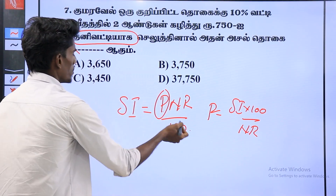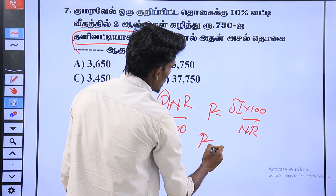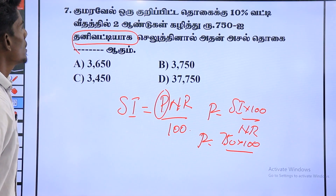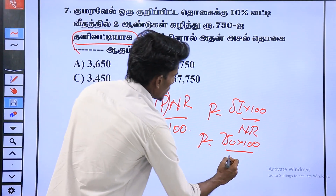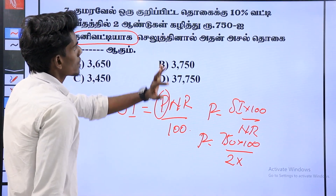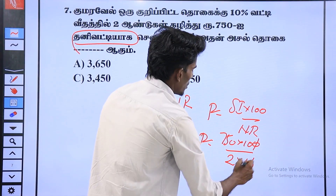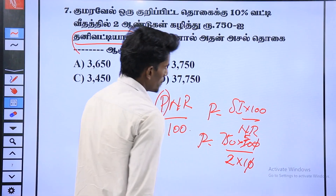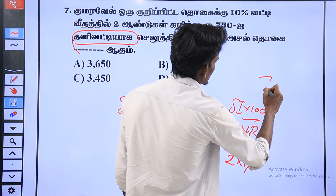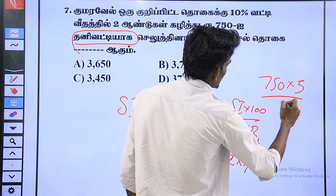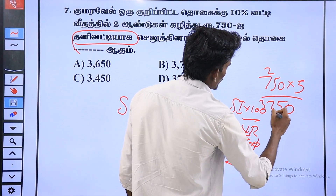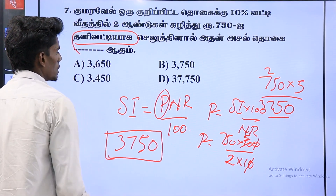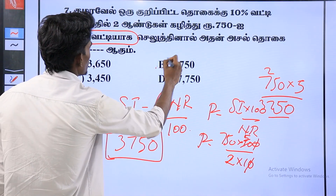Then P is equal to SI into 100 divided by NR. 85 into 100 divided by NR. The rate of interest is 10%. If you use it to 0 and say, it is equal to 5. 85 into 5 is equal. 25 into 5, 25 into 25, 25, 35, 37, 50. The answer is 350. Option B is the answer.